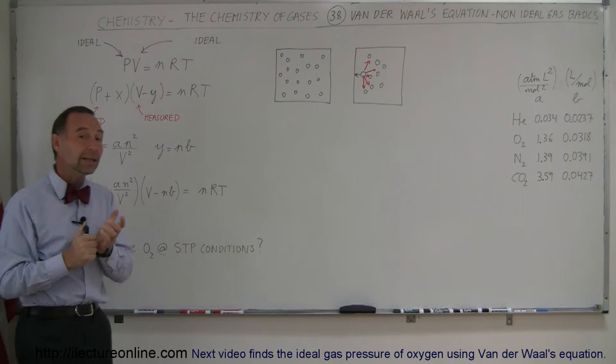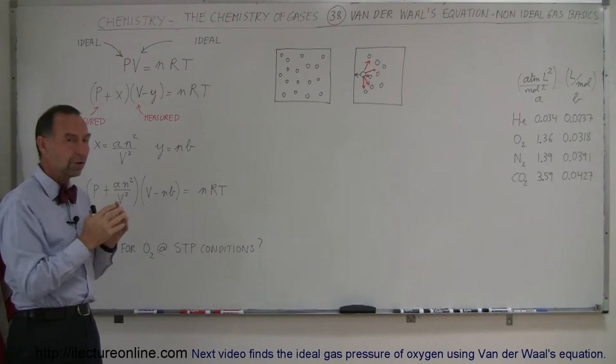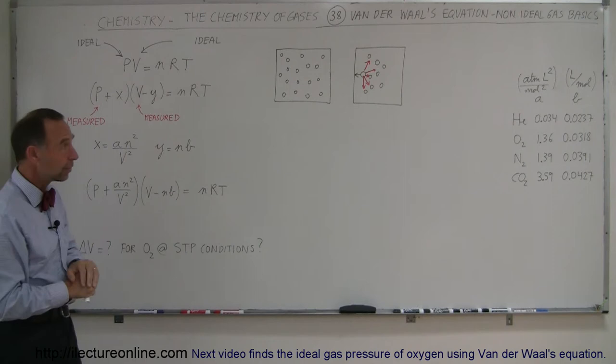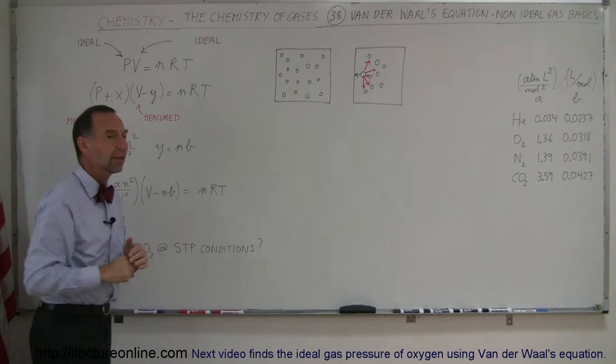Van der Waals recognized that if gases are very dense — if there's a lot of pressure and molecules are very close together — those things begin to make a difference. He wanted to adapt the equation so that it produces more realistic values for the PV equals nRT equation.